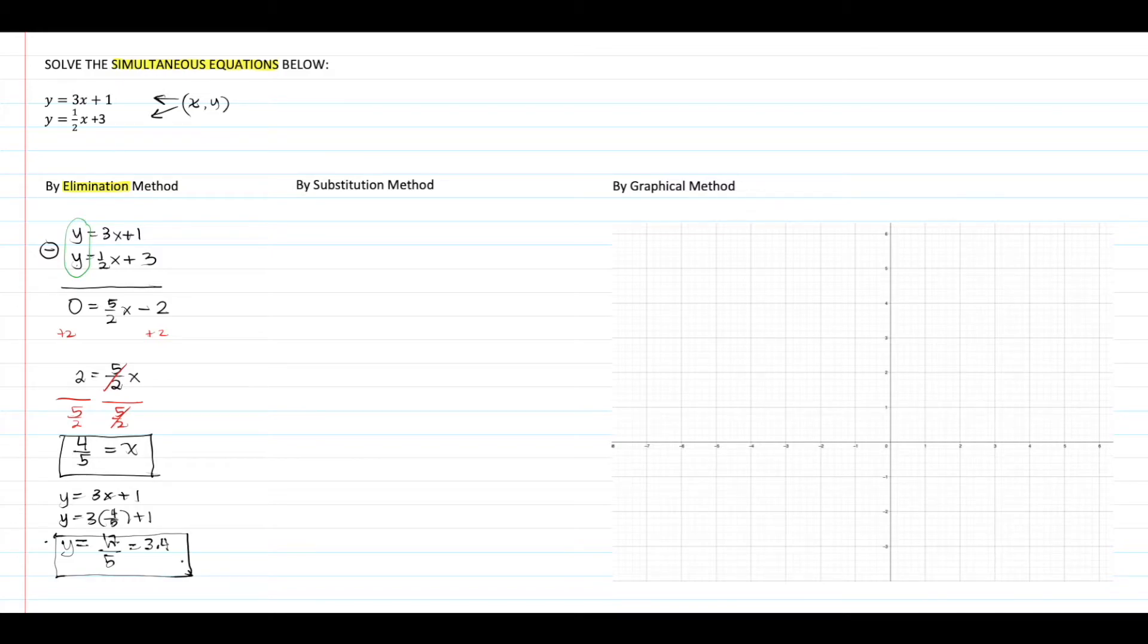Another method we can use to solve simultaneous equations is the substitution method. This method involves substituting the expression representing a variable into the other equation. If the first equation says that y is the same as 3x plus 1, use this value of y and substitute it to the variable y in the other equation. This process leads us to 3x plus 1 equals 1/2x plus 3.